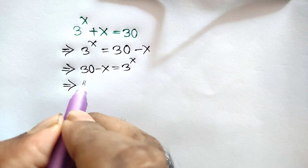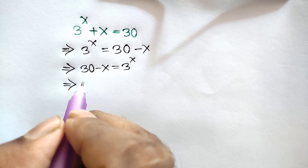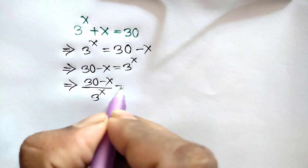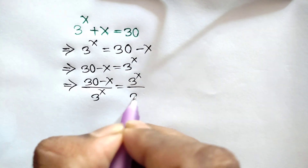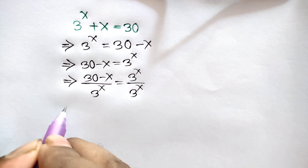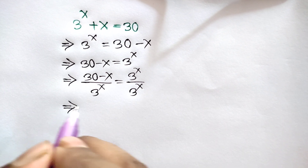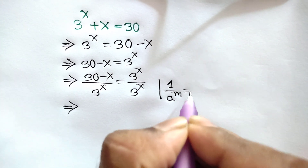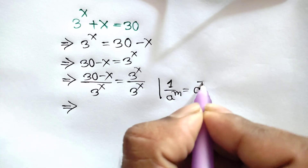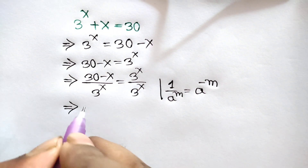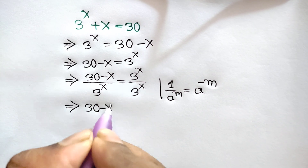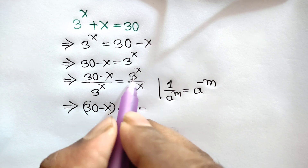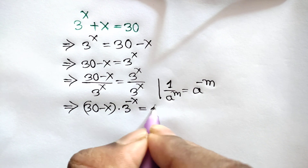If we divide both sides by 3 to the power x, we will have 30 minus x over 3 to the power x is equal to 3 to the power x over 3 to the power x. Applying the rule that 1 over a to the power m is equal to a to the power negative m, we get 30 minus x times 3 to the power negative x is equal to 1.